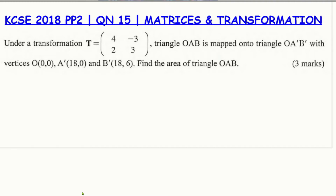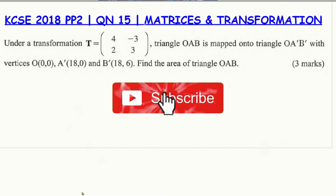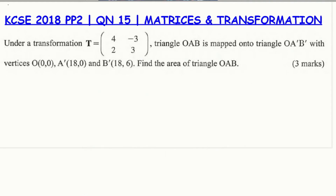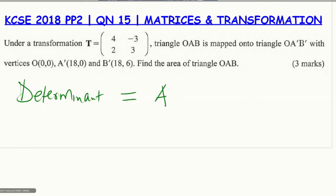The coordinates of the image are given and we need to find the area of the object. A key observation is that there is an important relationship between the matrix of transformation and the area scale factor. Specifically, the determinant of the transformation matrix equals the area scale factor.